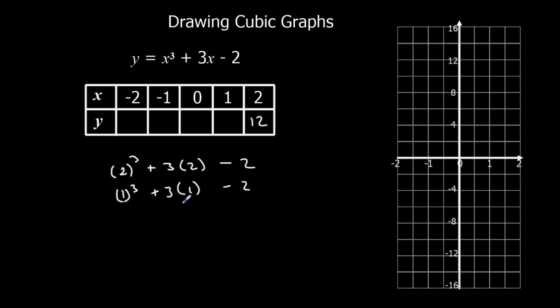1 cubed is 1, plus 3 is 4, takeaway 2 is 2. 0 cubed is 0, plus 3 zeros, which is 0, minus 2, so just minus 2. Minus 1 cubed is minus 1, plus 3 minus 1's, so minus 4, minus 2, minus 6.